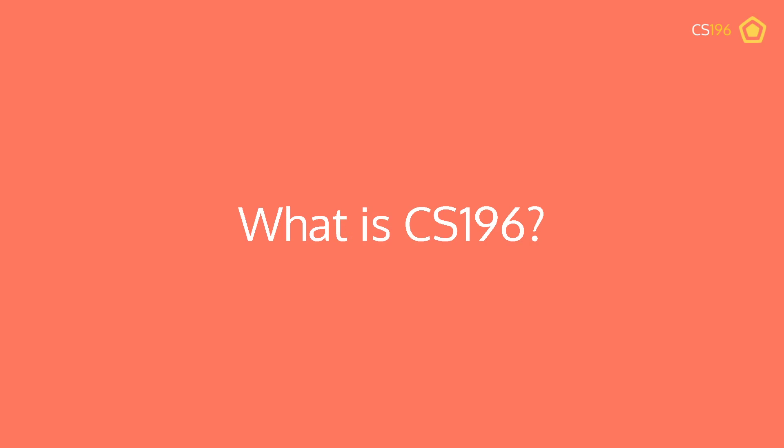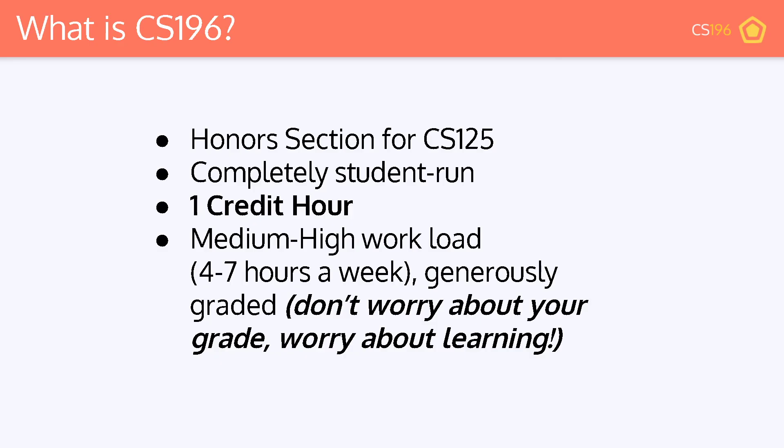What is CS196? CS196 is the honor section for CS125. It's a completely student-run course. It's a one credit hour course, but it's a generally higher workload than your average one credit hour course. That being said, we do grade very generously because we want you not to have to worry about your grade and your GPA, but rather to worry about learning and bringing a lot of value out of this class.